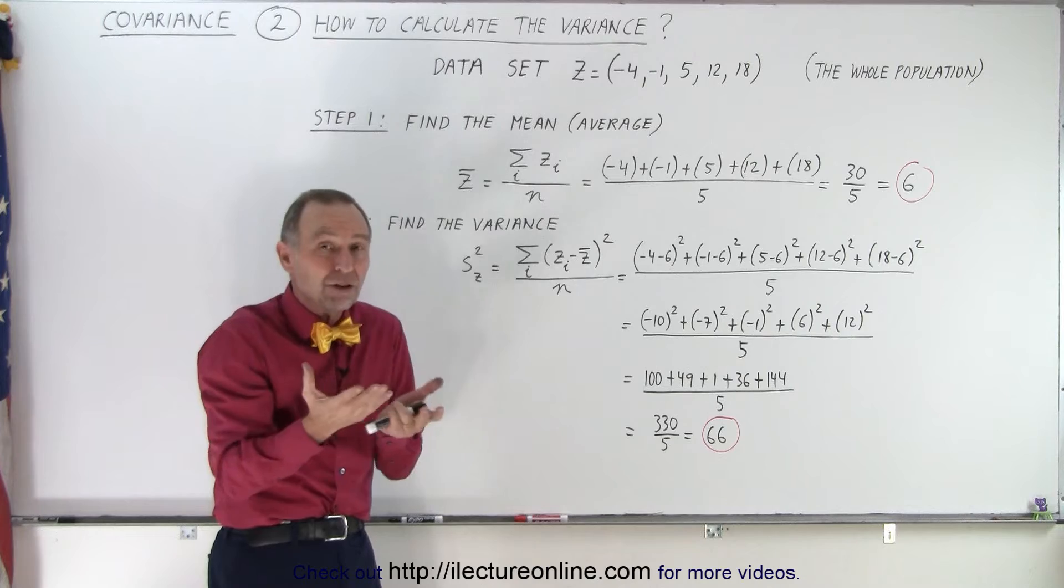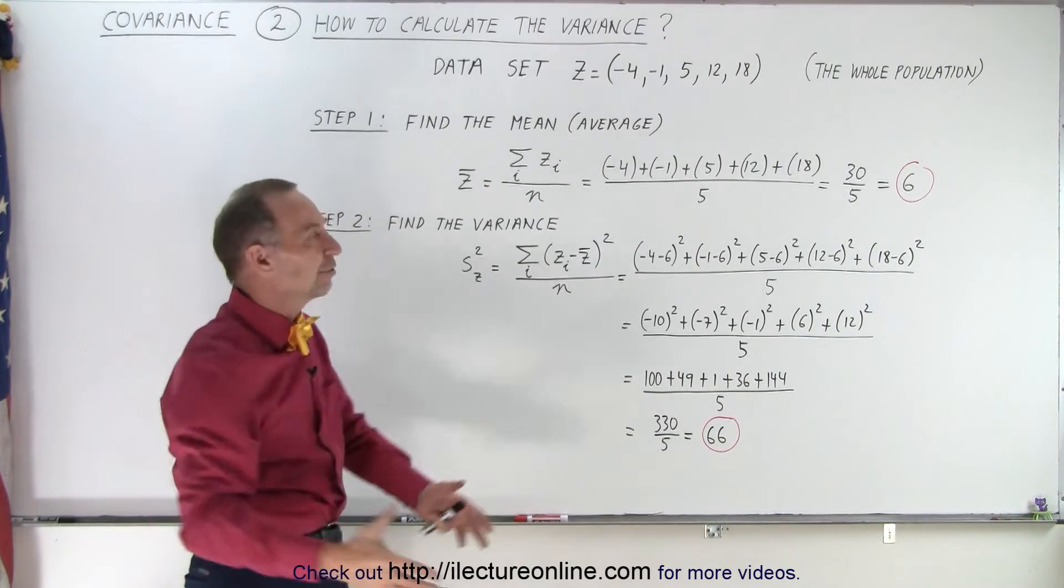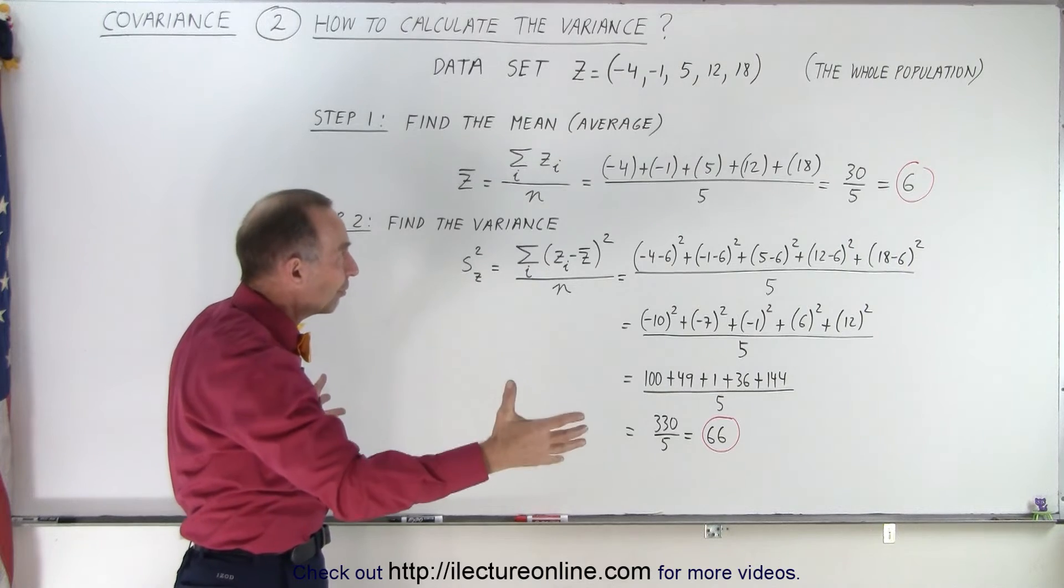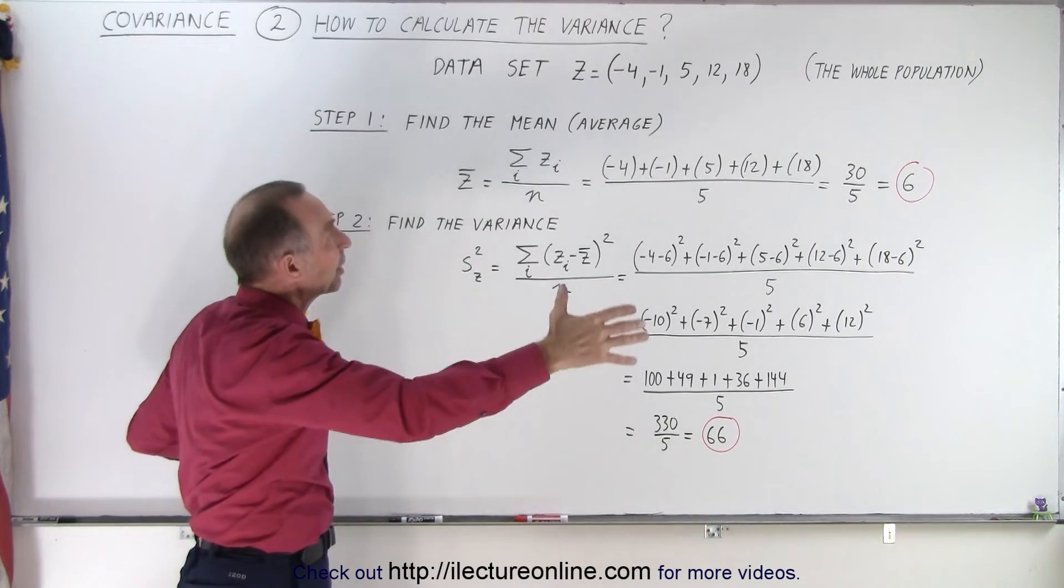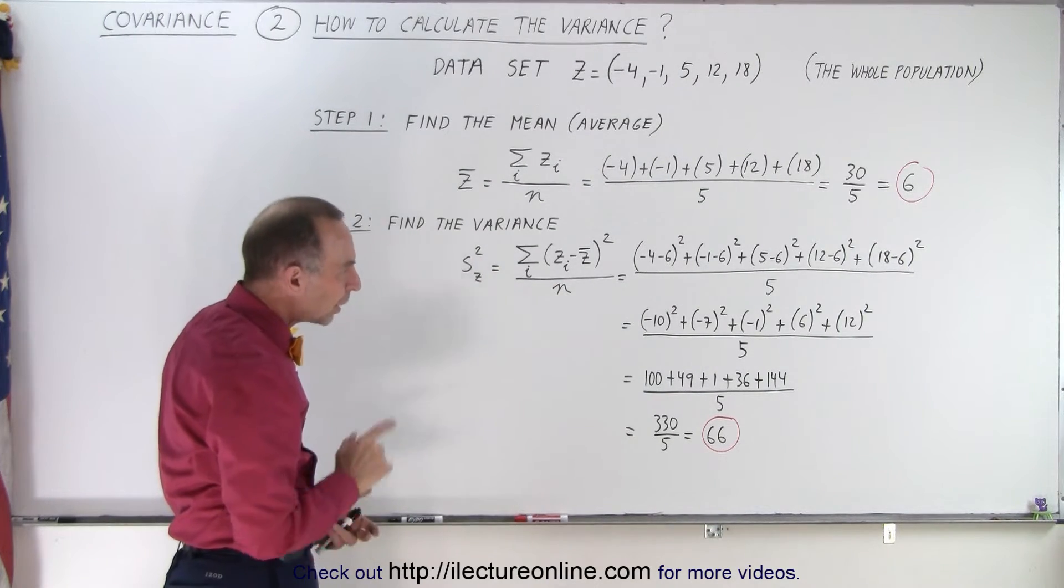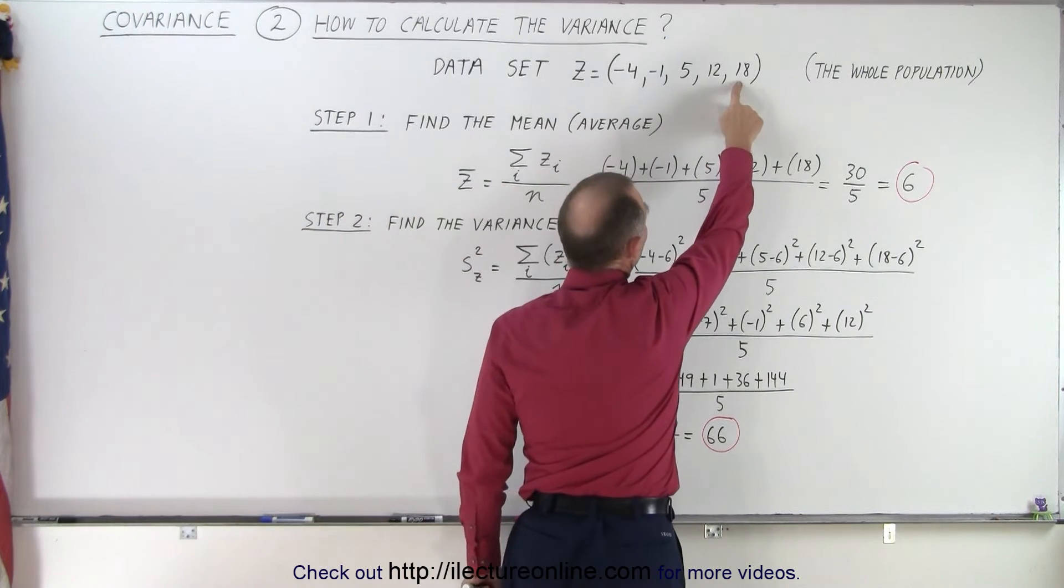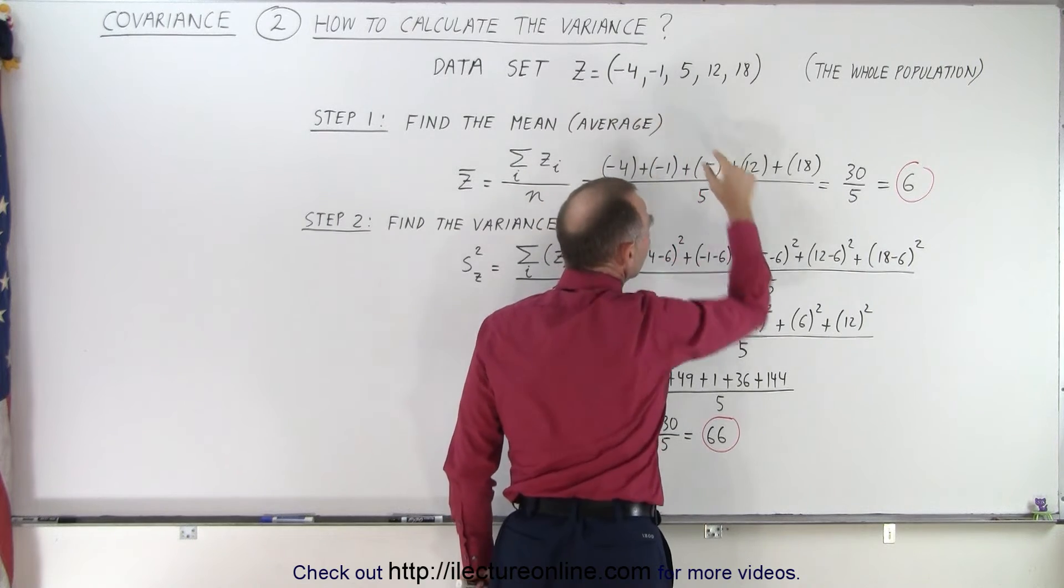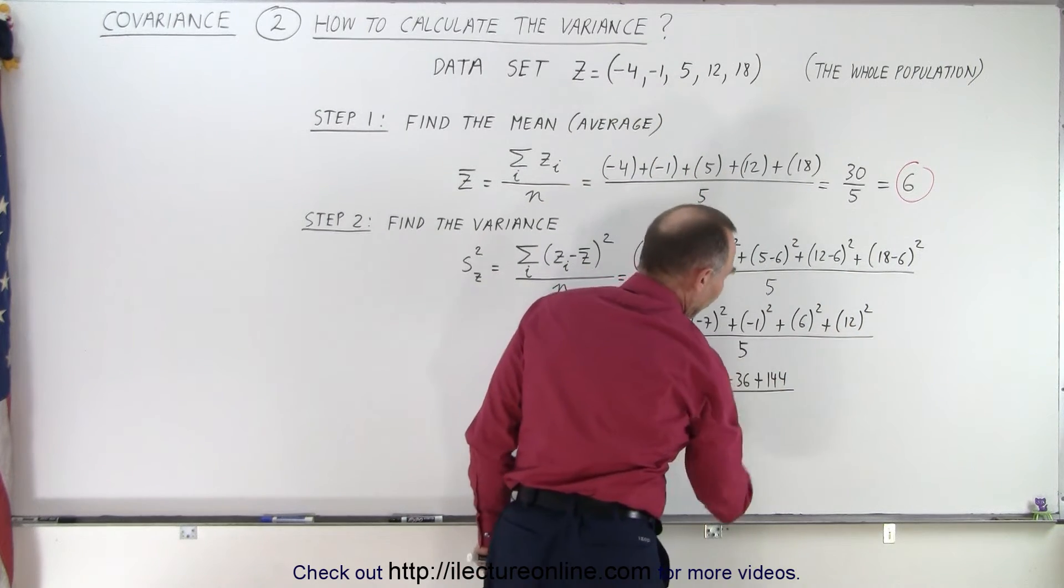So the variance is a measure of the variation of the numbers in the data set—how far apart the small ones are from the big ones and how spread out the numbers are. Also notice that a single number that is significantly larger or smaller than the average can really add a lot to the variance.